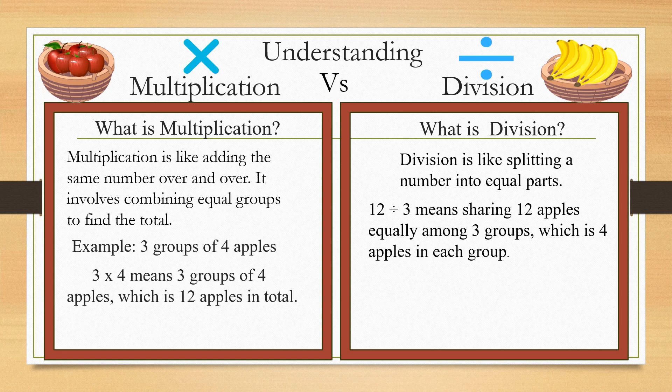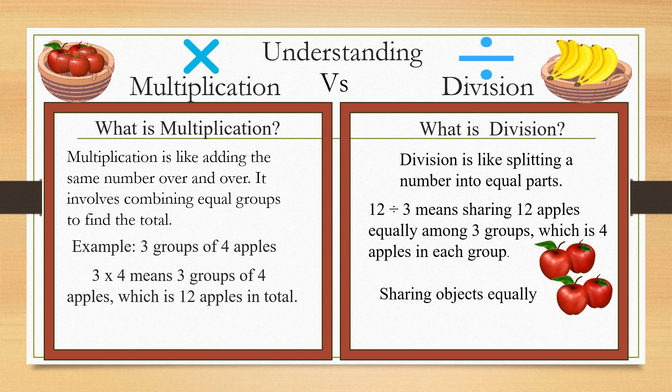Now, what is division? Division is like splitting a number into equal parts. 12 divided by 3 means sharing 12 apples equally among three groups, which is four apples in each group. Sharing objects equally — that is what division means.